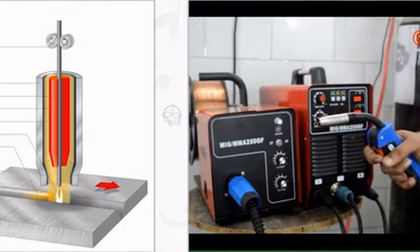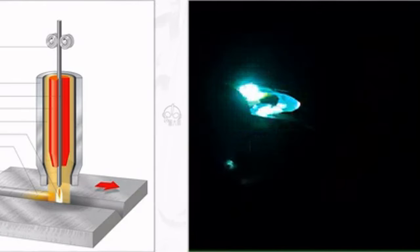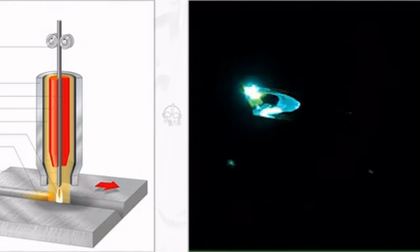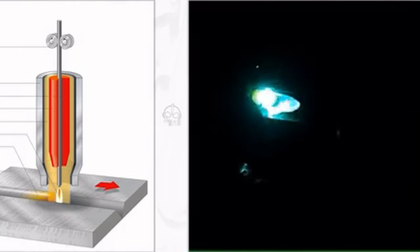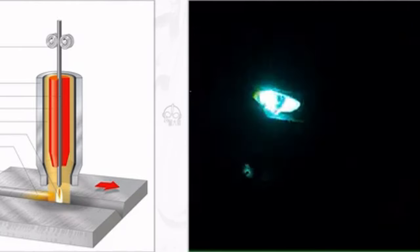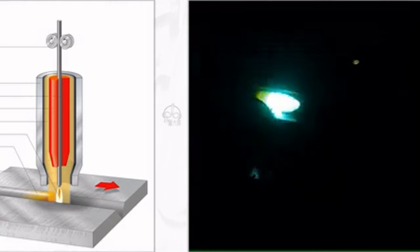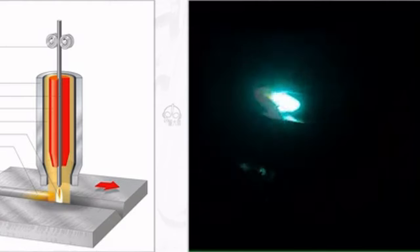Due to the strong penetration of the CO2 arc, it can reduce the need for grinding and beveling, significantly increasing production efficiency compared to manual arc welding. The shielding gas is cheap, lowering costs. The arc's heat is focused on a small area, and the CO2 gas flow cools the base metal, minimizing burn-through and deformation in thin welds. It lowers hydrogen in the weld, preventing cold cracks, ideal for large welding tasks.